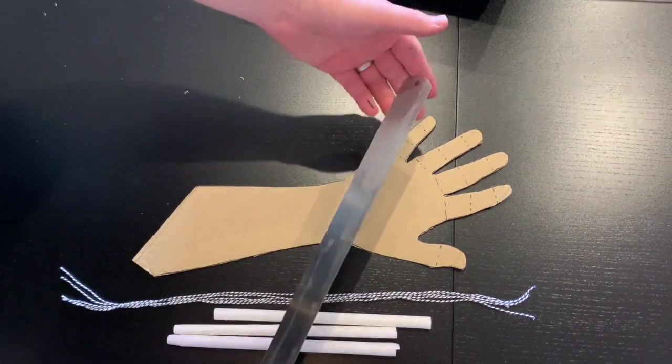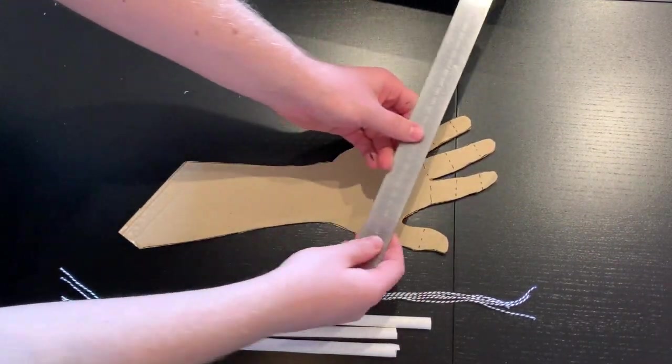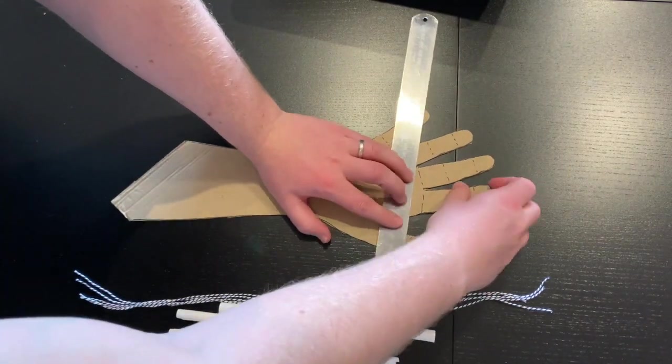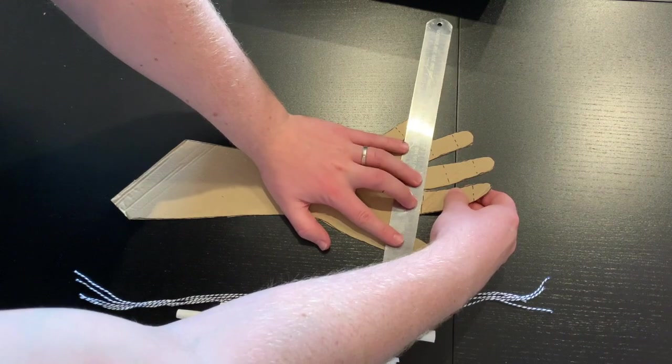Our next step is using a straight edge, you can use a ruler or a credit card, anything you would like to bend the fingers along your dotted lines.